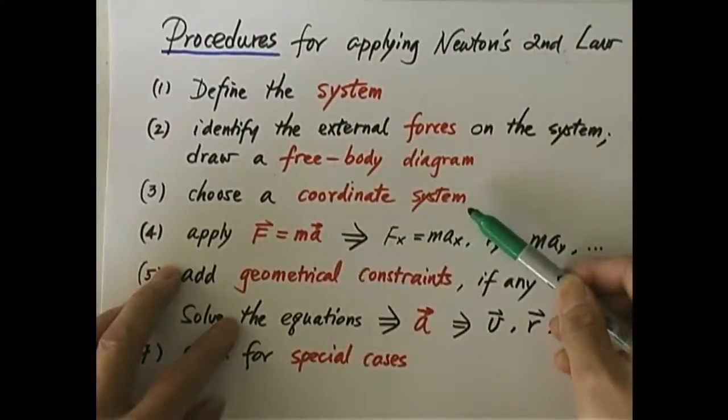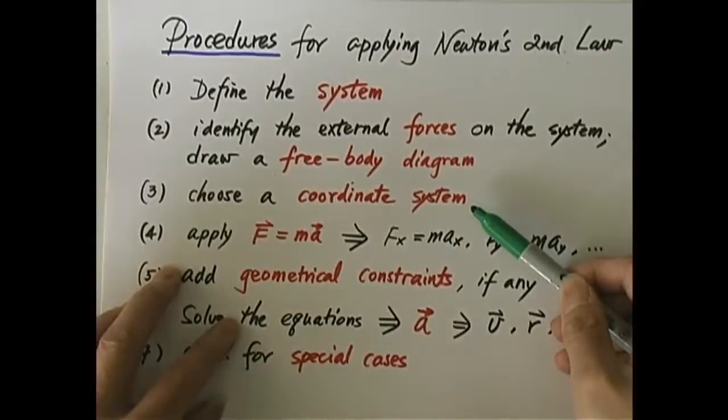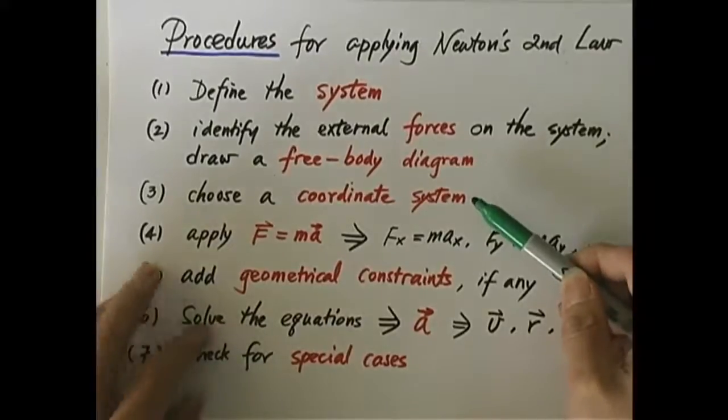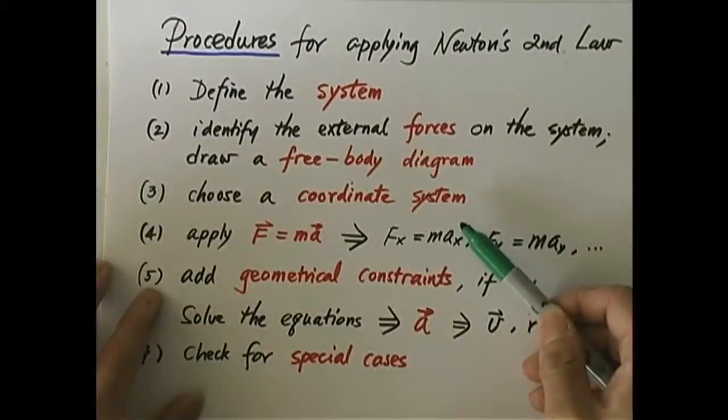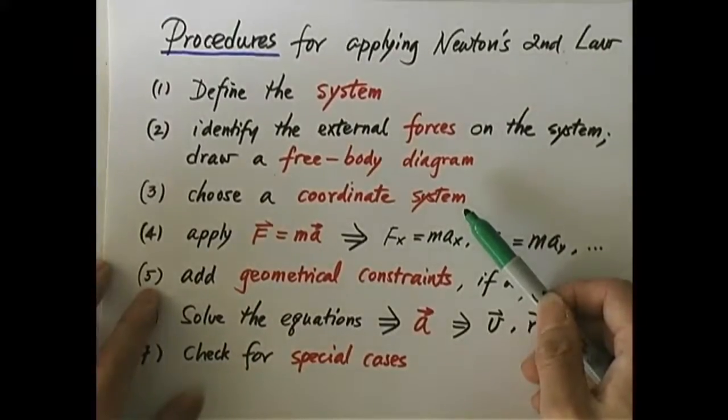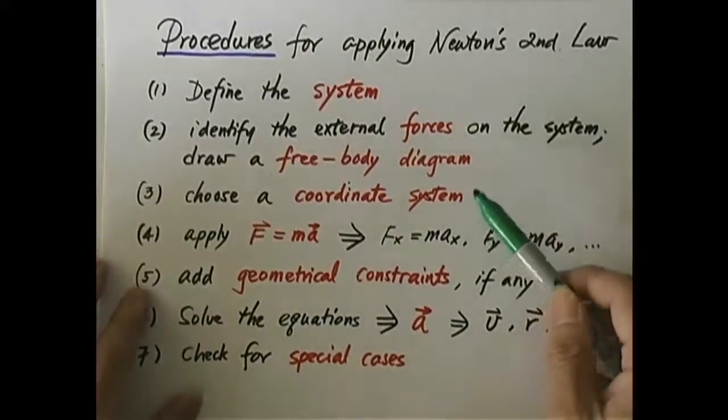Rather, you can use a coordinate system to turn these vector quantities into scalar quantities because the component of each vector is just a scalar. So if you choose a coordinate system, say x, y, z coordinate, you can then think of Newton's second law as three separate scalar equations, one in the x direction, the other in the y direction, and the next one in the z direction. That is why I want you to choose a coordinate system so that you can turn these vector quantities into components that are scalars.